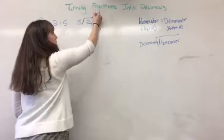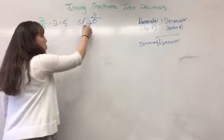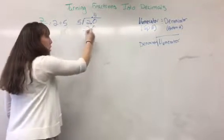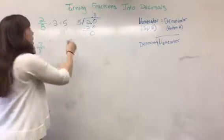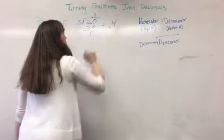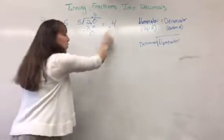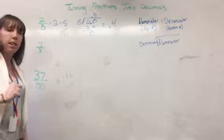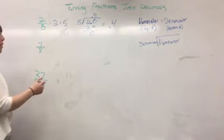So we're putting 4 up there. And then we subtract 20. Now we're at 0, so we're done. So our decimal is 0.4. 2 fifths looks like 0.4 as a decimal. Now let's tackle 7 eighths.